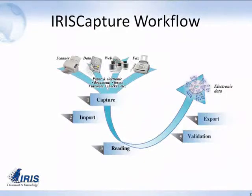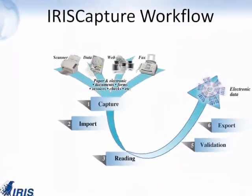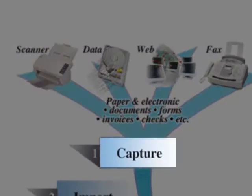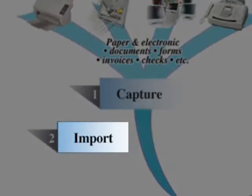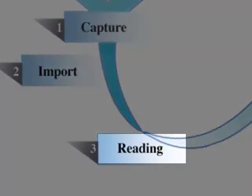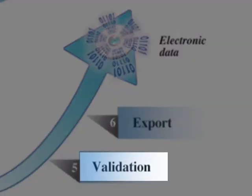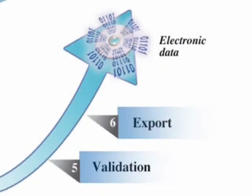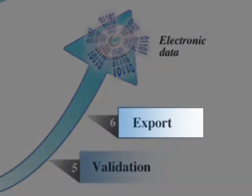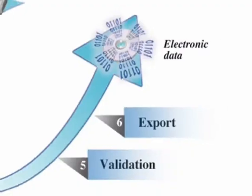And there we go — we've done the whole workflow. We've done the capture, where we actually pick up the data. We've done the import, where we do some image cleanup. We do some document classification and full-text OCR. We've done the reading, where we go and extract the data from the invoices. Validation, where a user will come in and make any corrections. And the export is where we simply send out the data as an XML file or CSV.